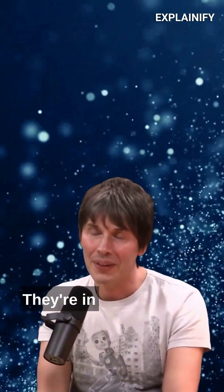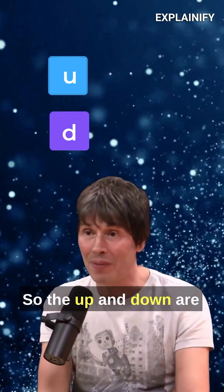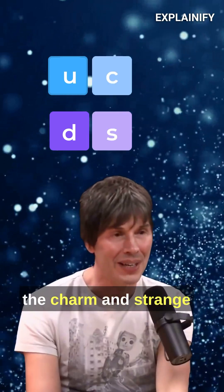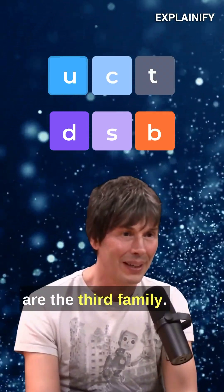We have six quarks in three families. The up and down are one family, the charm and strange are another family, and the top and bottom are the third family.